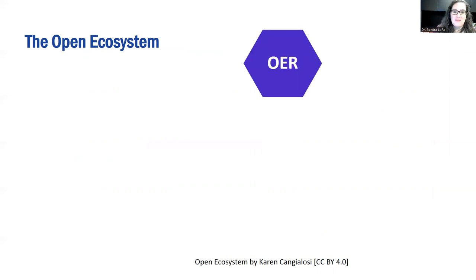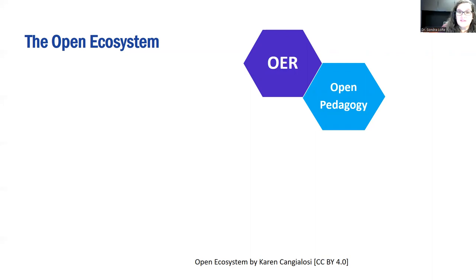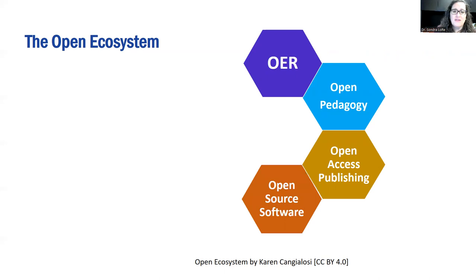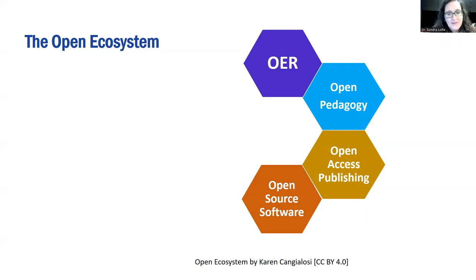An open ecosystem includes OER — open education resources — and open pedagogy: teaching contributed to by OER materials you selected, but also materials generated by you and your students. Case studies are a great example. Open access publishing means sharing our work openly, not behind a paywall, increasing equity and giving students an opportunity to do that as well. Using open source software — for example, working in R instead of expensive SPSS — means students can access equitable tools.